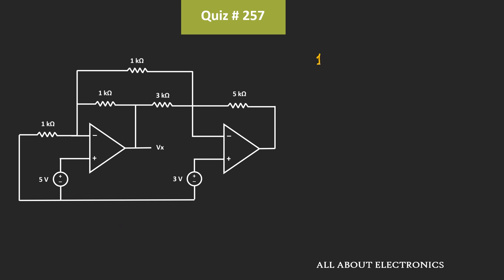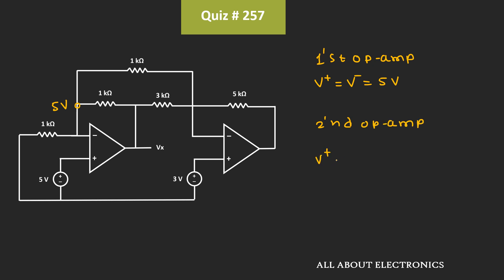That means for the first op-amp, this voltage V+ is equal to V- is equal to 5V. That means this voltage will also appear at the negative terminal. Similarly, for the second op-amp, the voltage V+ is equal to V- is equal to 3V. That means this 3V will also appear over here. And at this node, the voltage is equal to Vx.